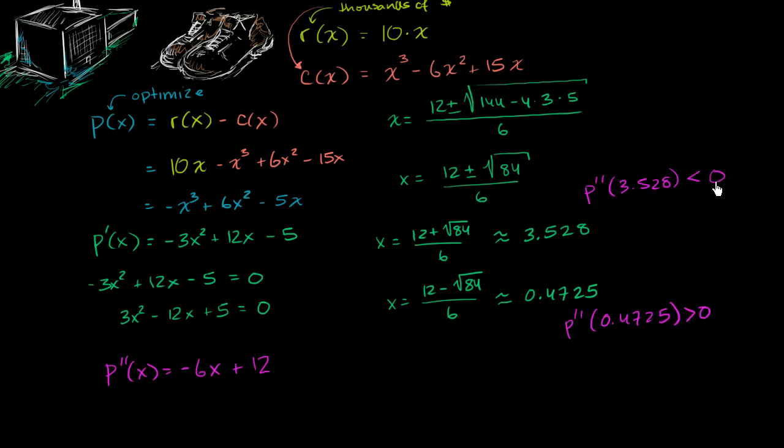So the fact that the second derivative is less than 0 means that my first derivative is decreasing when x is equal to this value, which means that our function is concave downwards here. And concave downwards means it looks something like this. And you can see, when it looks something like that, the slope is constantly decreasing. So if you have an interval where the slope is decreasing, and you know the point where the slope is exactly 0, which is where x is equal to 3.528, it must be a maximum.